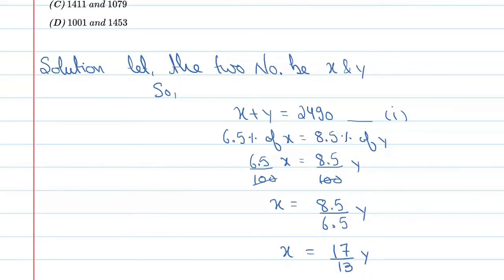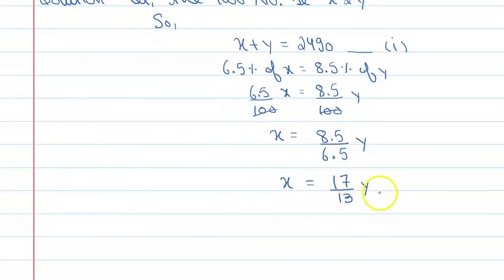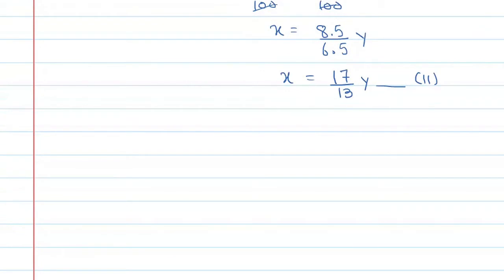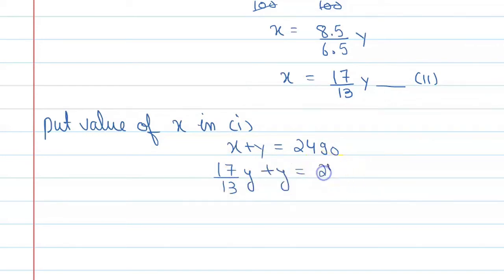Now put the value of x in equation number one. First mark this as equation 2. So x plus y equals 2490, which becomes 17/13 y plus y equals 2490.